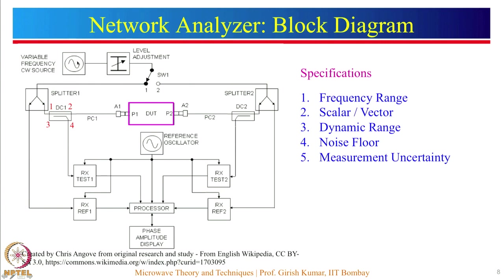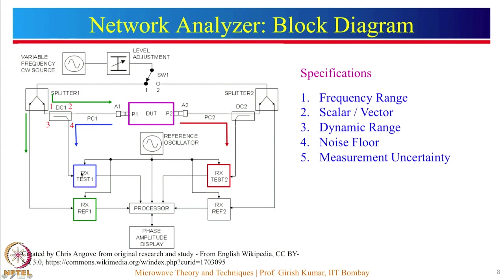As you can see, the various blocks include VCO, power divider, and coupler, which we have studied in this course. The signal generated by the variable frequency continuous wave source is split into two halves. One half going into the power detector corresponds to the incident power level. The second half goes through the directional coupler to the DUT; some part of that signal is transmitted and measured using the test 2 power detector, corresponding to transmitted power level.